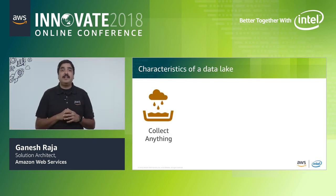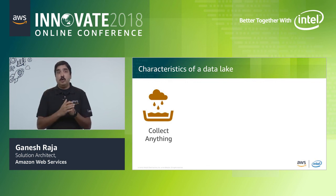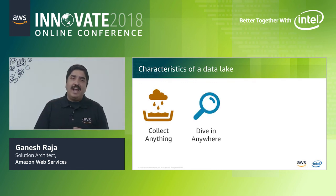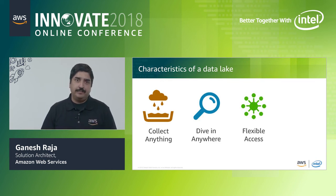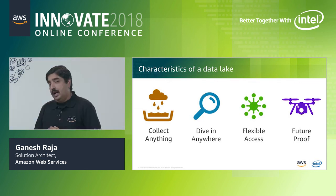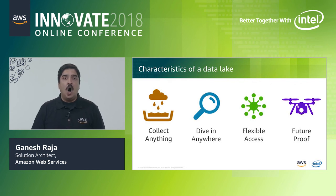Let us once again revisit the characteristics of a data lake. You should be able to collect anything — connect to data sources both batch and real-time to ingest the data, and provide infinitely scalable storage that is durable and available. You should be able to dive in anywhere and get flexible access, meaning the data lake should support interactive queries and access the data using the tool of your choice. Future-proof the data lake by storing data in open source formats and using open source tools to access the data. On top of all this is the pay-for-what-you-use model that ensures you never have to over-provision storage or capacity, and lets the data lake scale as your business grows.